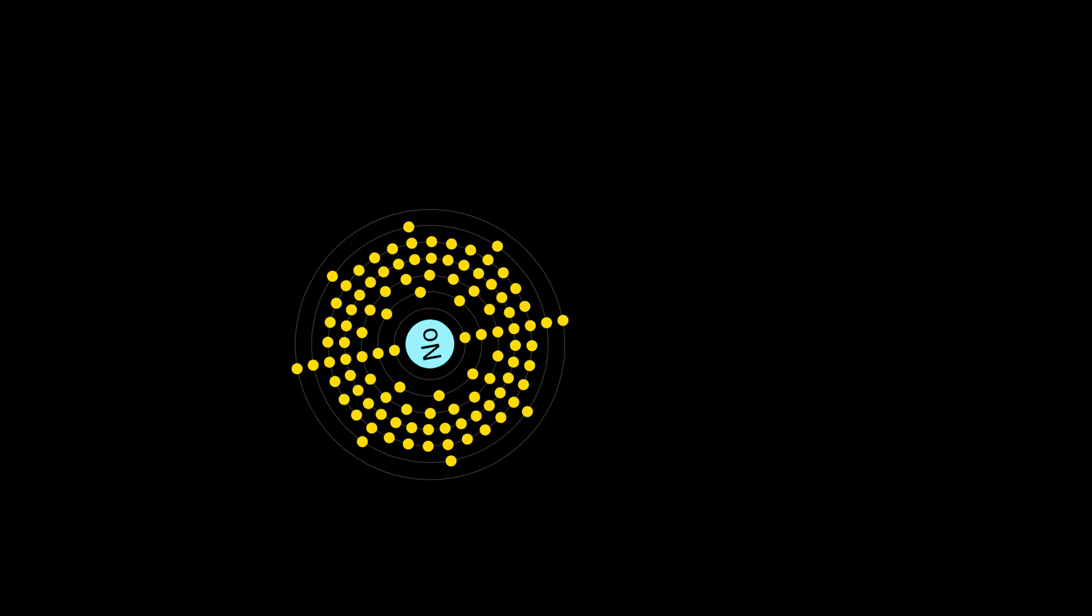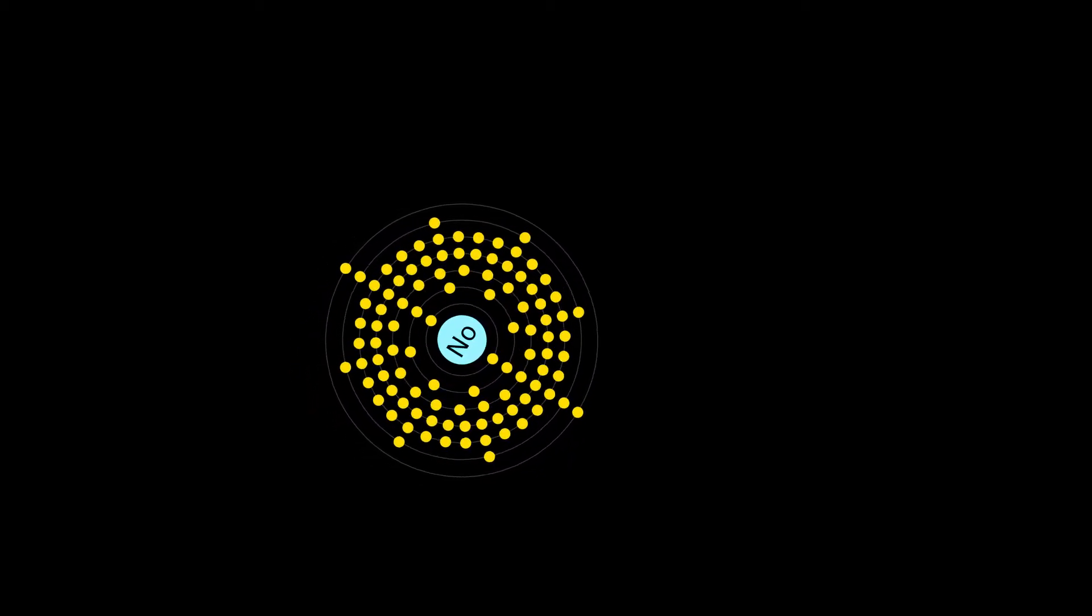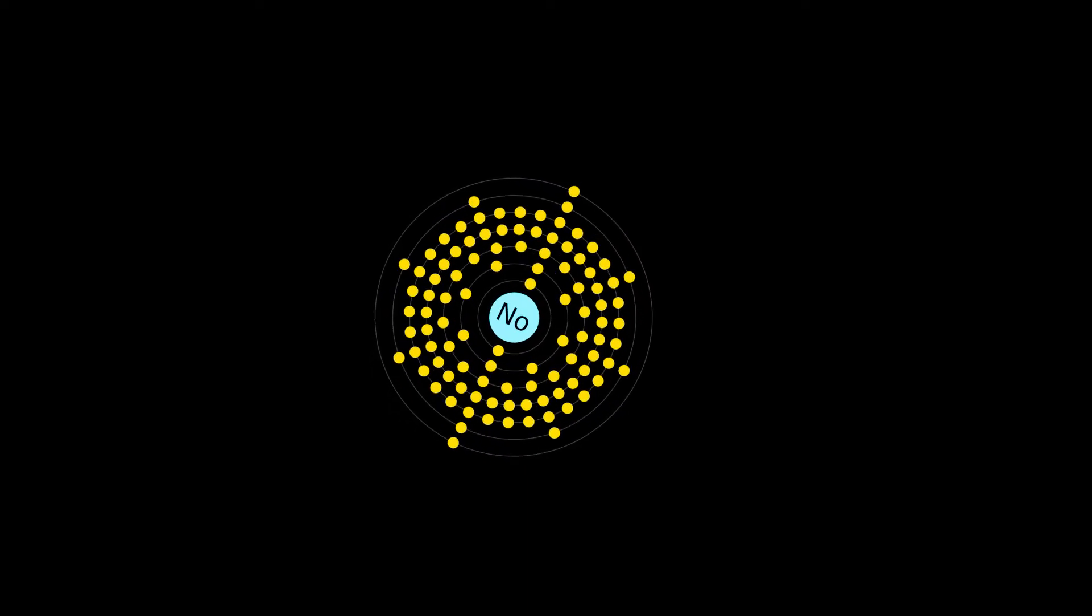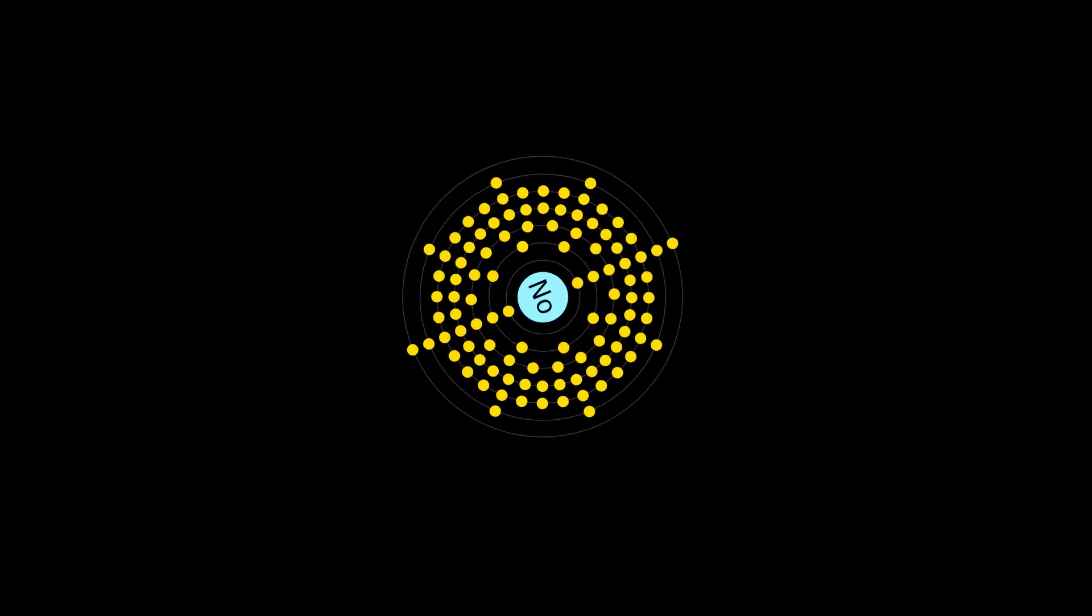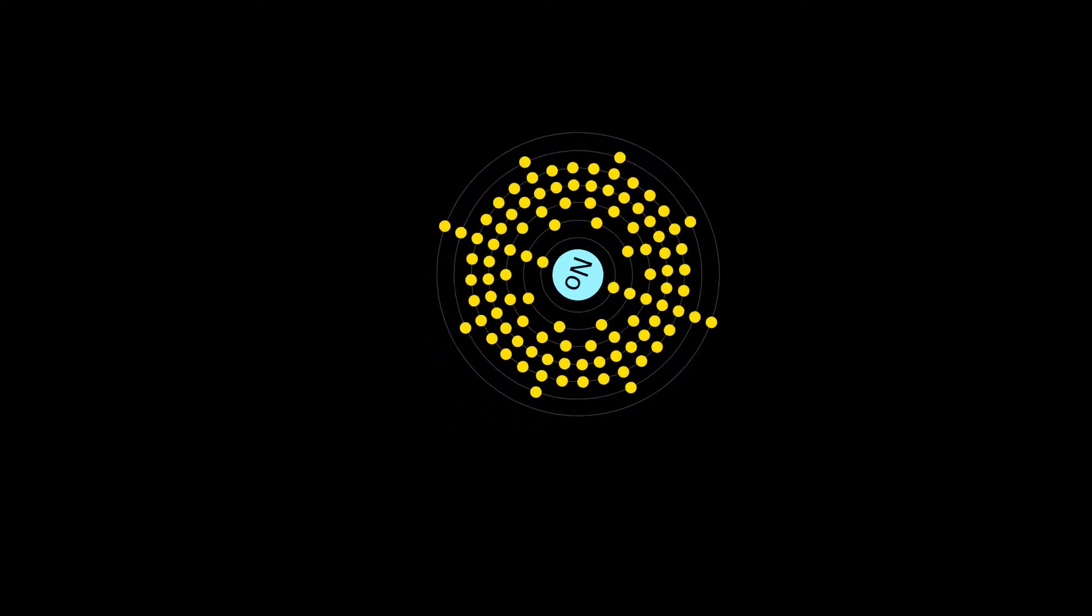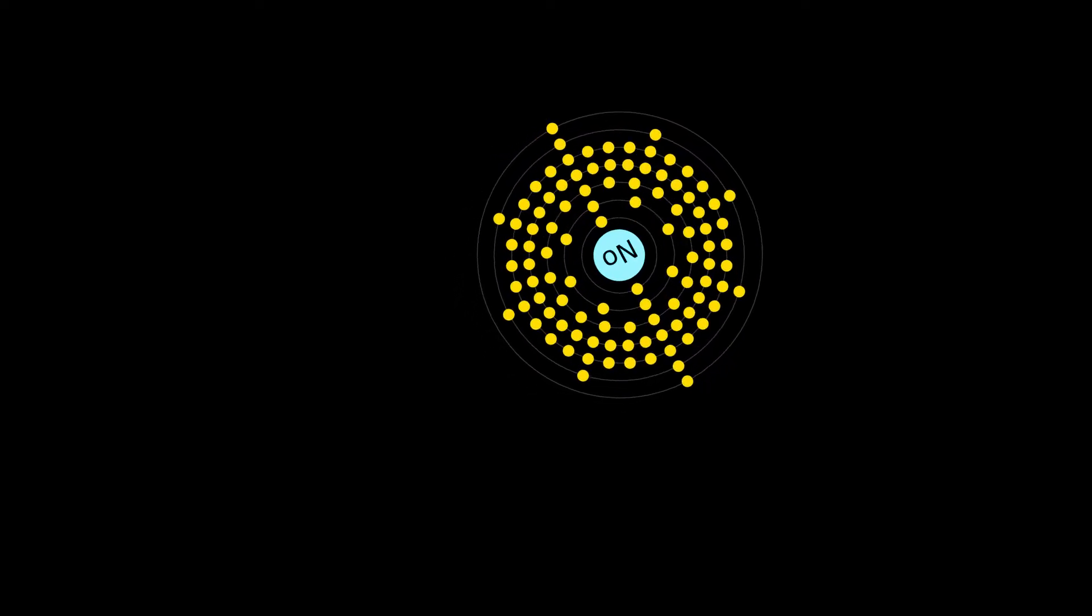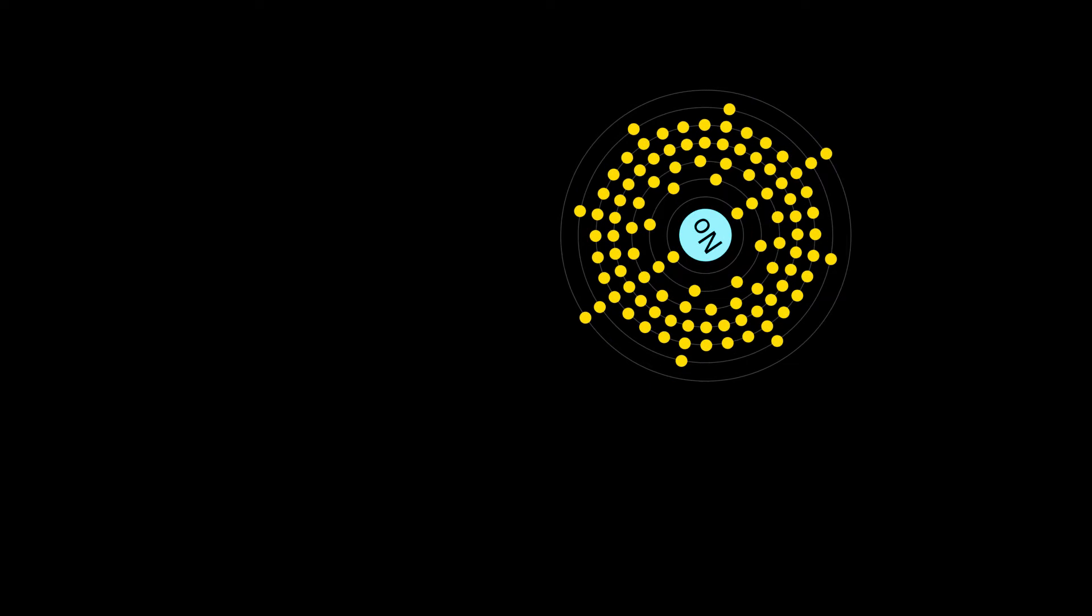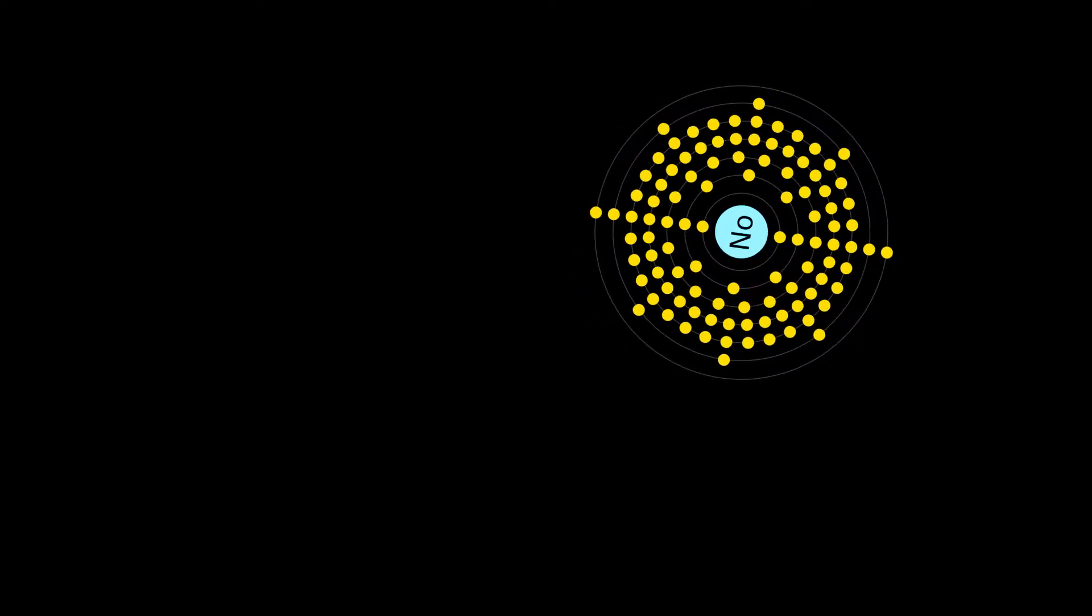Before nobelium's discovery, it was predicted that it would show a stable plus 2 oxidation state as well as the plus 3 state characteristic of the other actinides. These predictions were later confirmed, as the plus 2 state is much more stable than the plus 3 state in aqueous solution and it is difficult to keep nobelium in the plus 3 state.